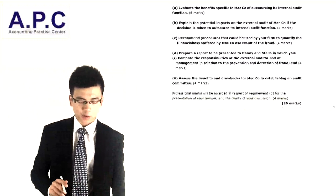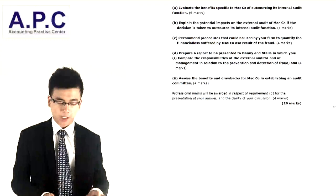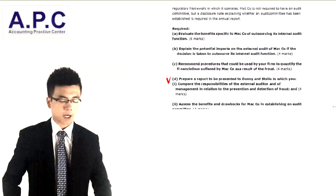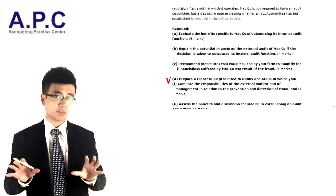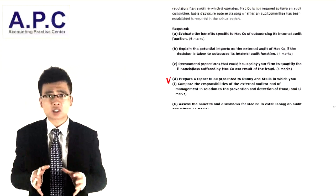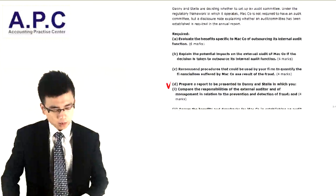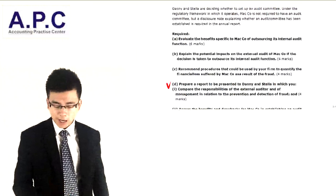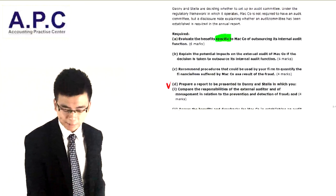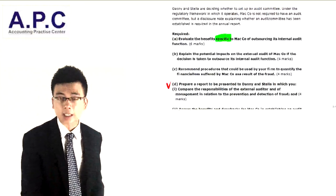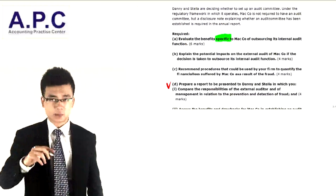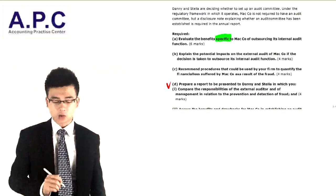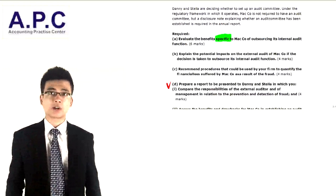Professional marks will be awarded irrespective of Part D, which means Part A, Part B, and Part C we don't have to write in a professional way — we don't have to use a specific format for these. For Part A, evaluate the benefits specific to the company, specific to the information the examiner has given to you, of outsourcing the internal audit function.